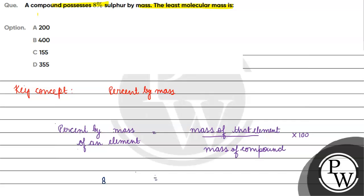8 is equal to the element's mass - what can that mass be? We'll take its molecular mass, which is 32 grams per mole. Molecular mass of the compound we need to find - let's call it x.